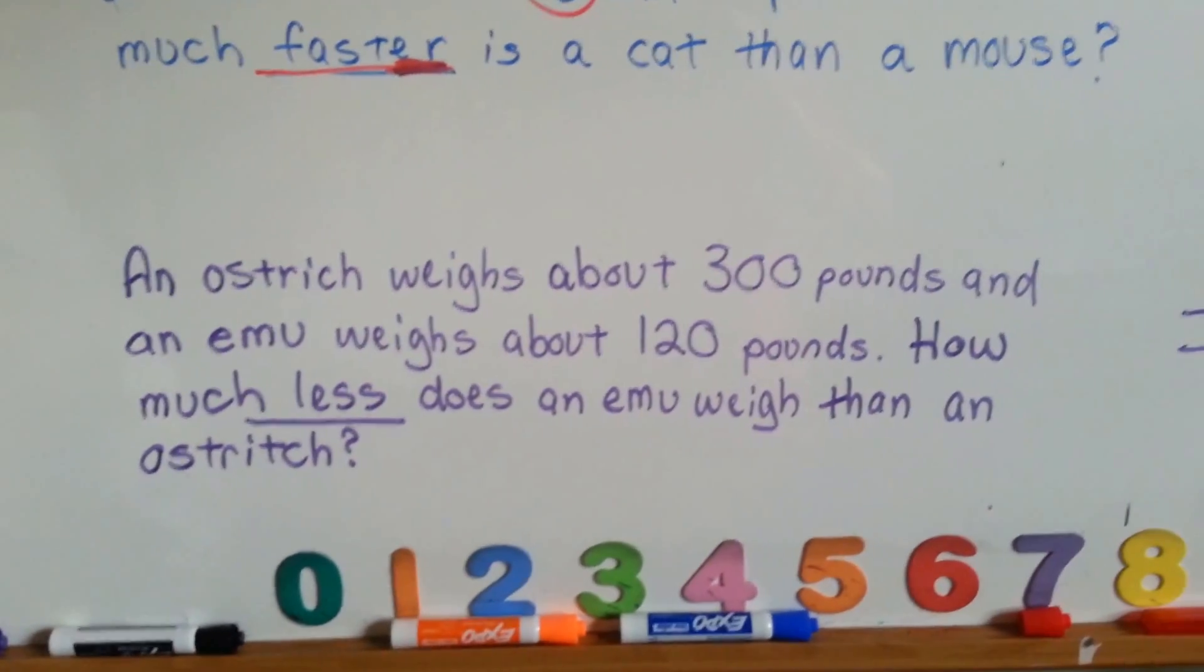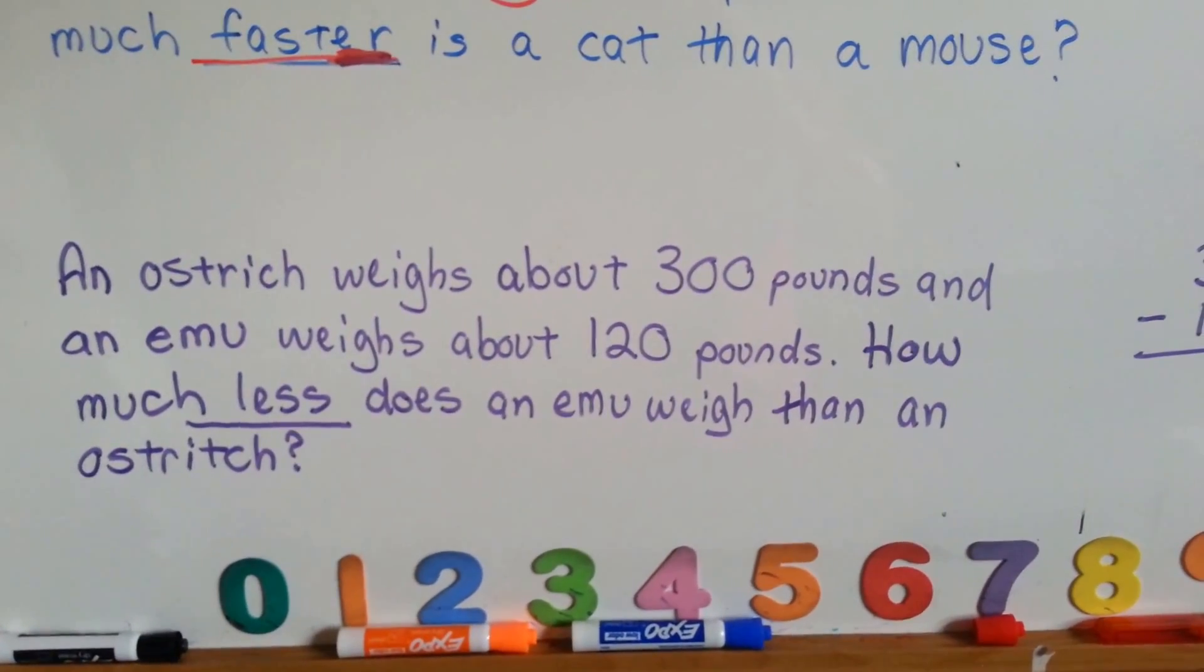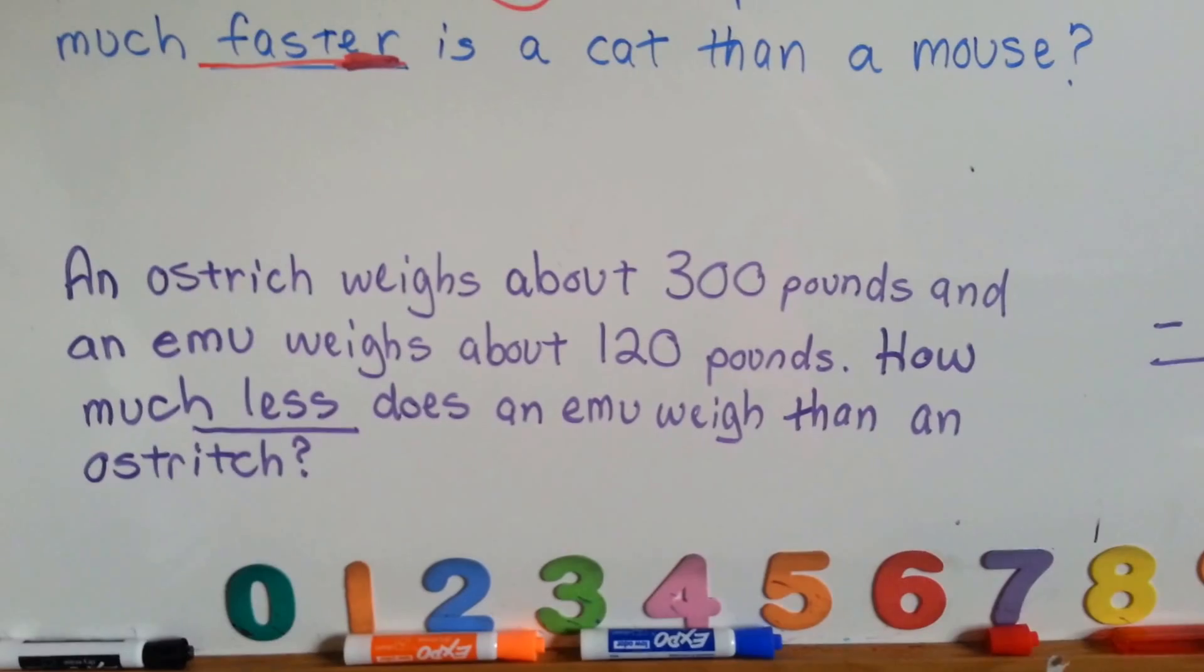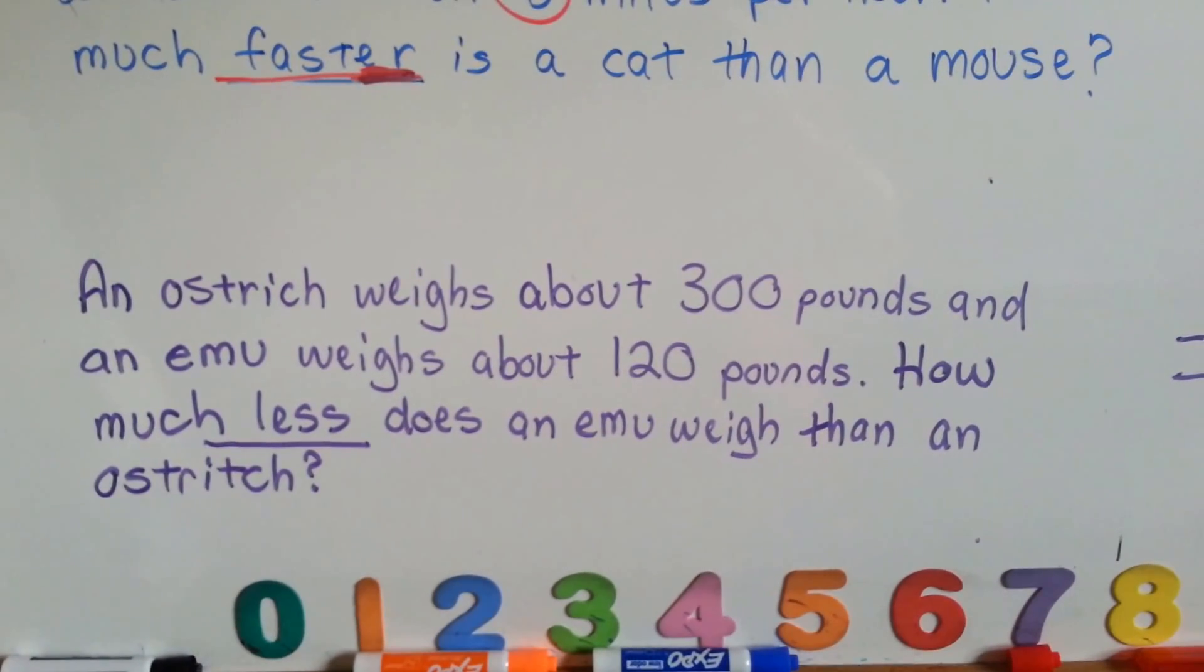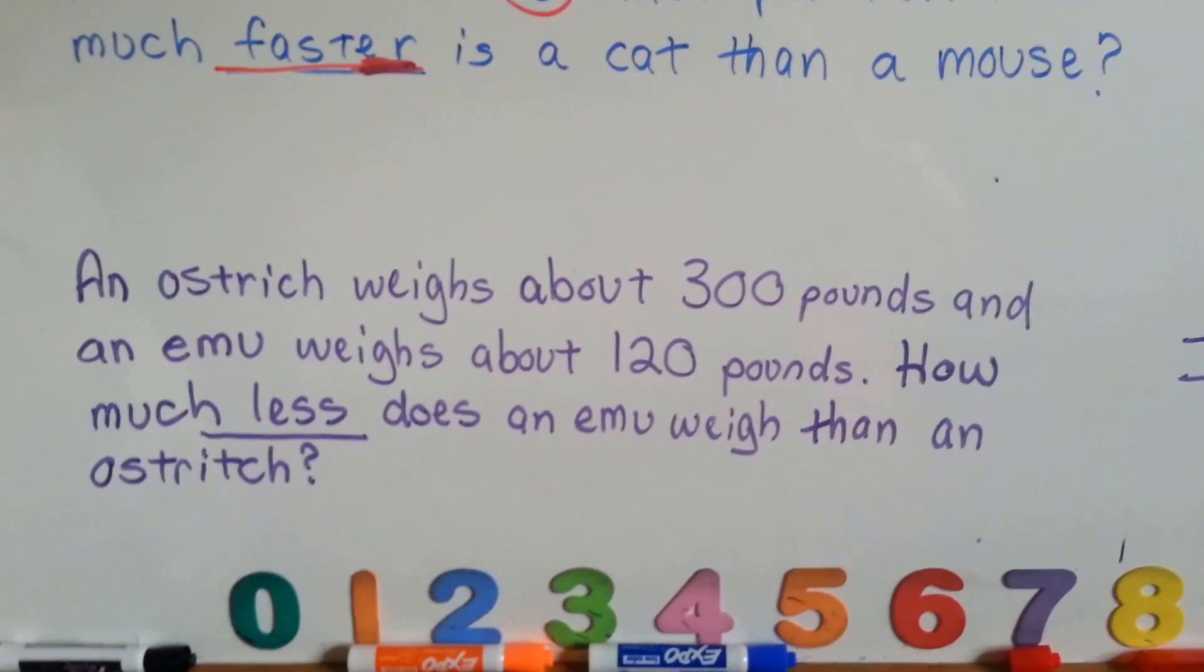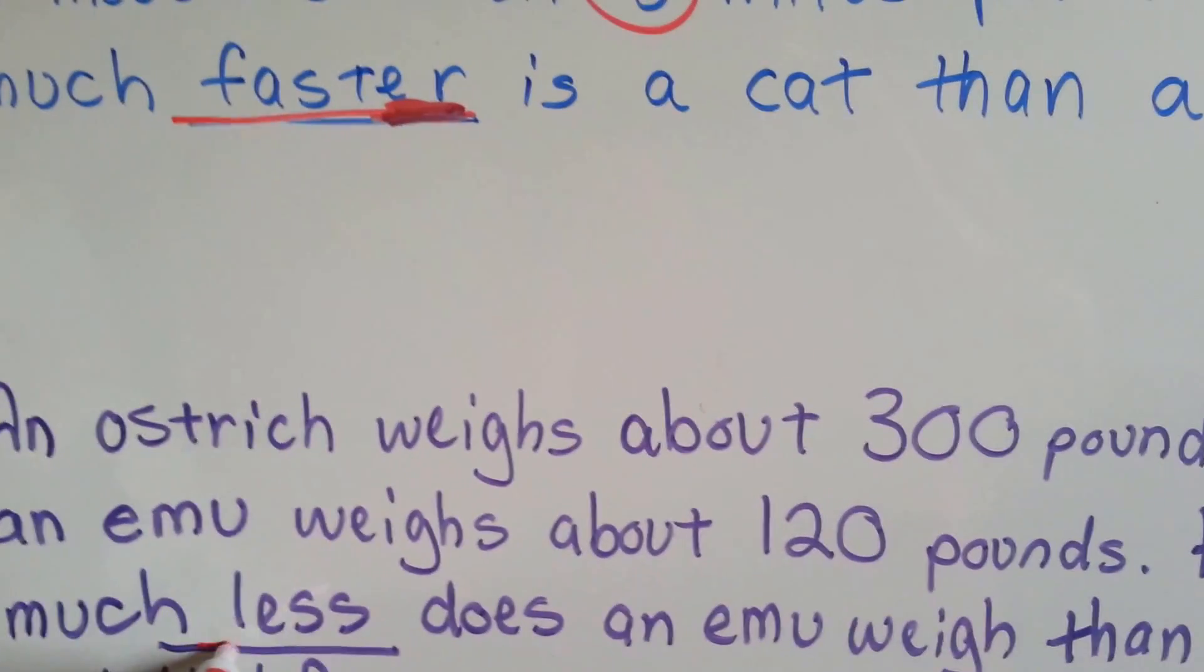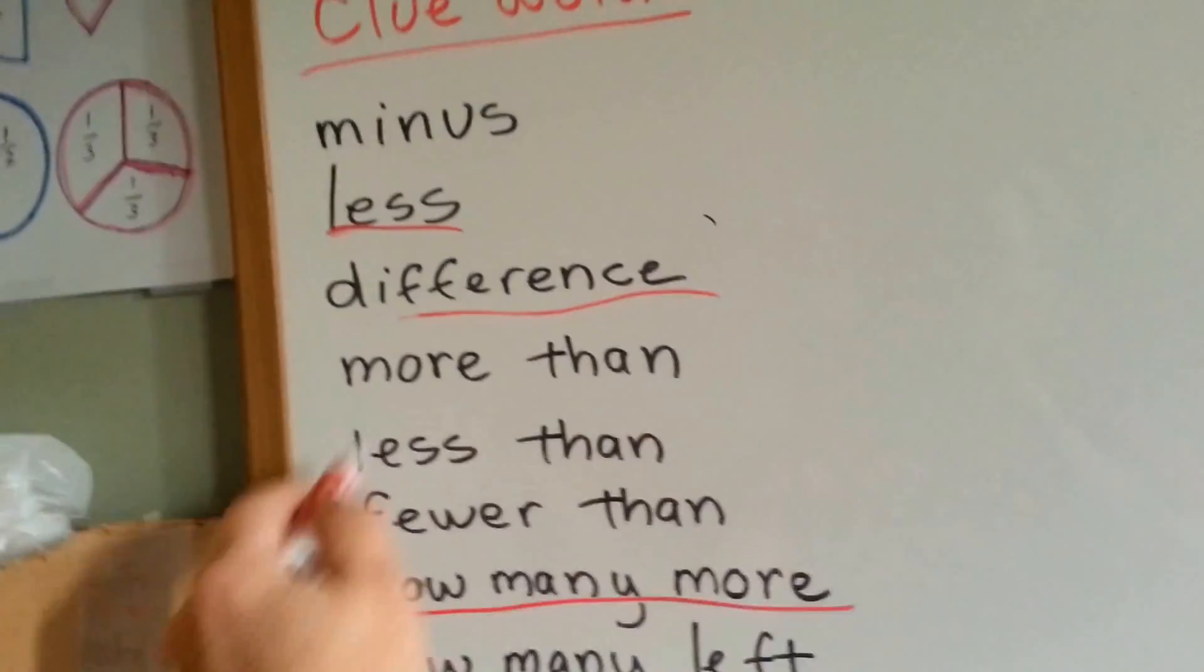How about this one? An ostrich weighs about 300 pounds and an emu weighs about 120 pounds. How much less does an emu weigh than an ostrich? Here's our word less. That's our clue word. Less or less than.